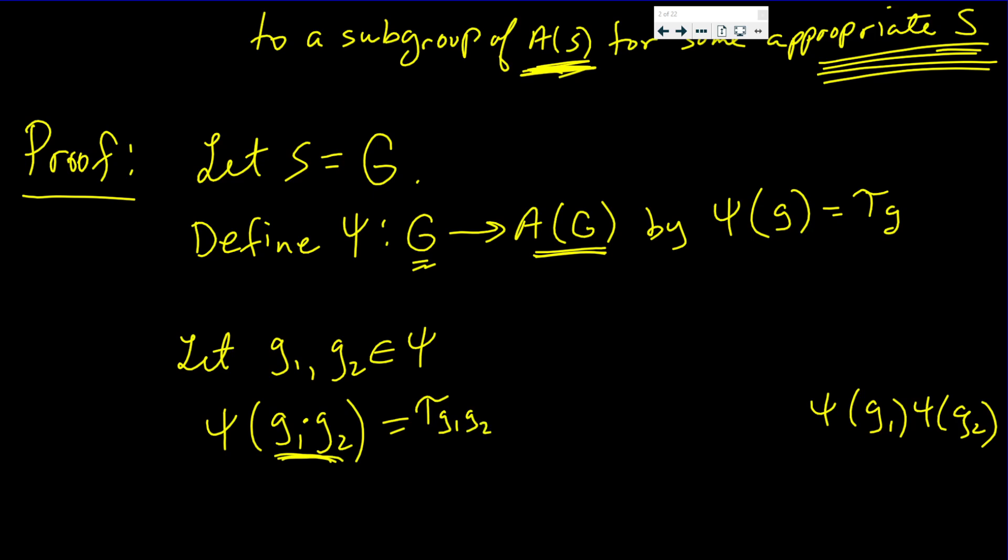So that's τ_g₁g₂. Now if I can say that equals τ_g₁ times τ_g₂, well this is φ(g₁) and this is φ(g₂). If all the equal signs are valid I showed this is a homomorphism, but I don't have this one.